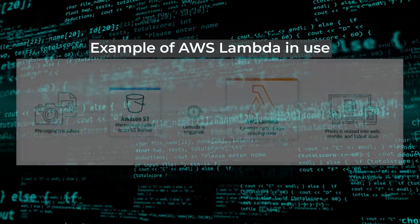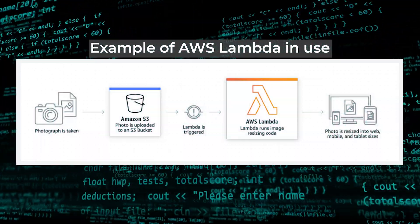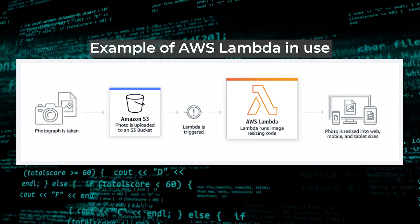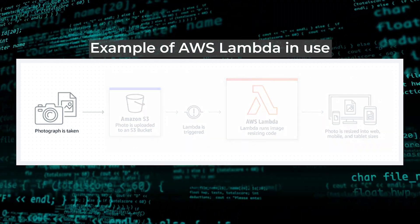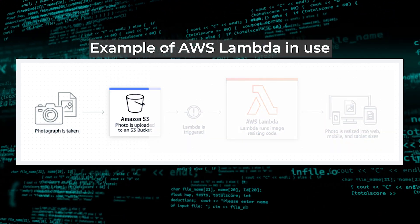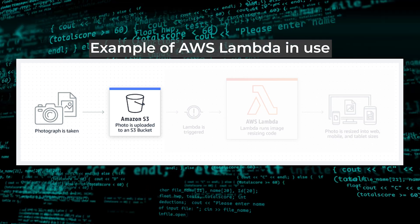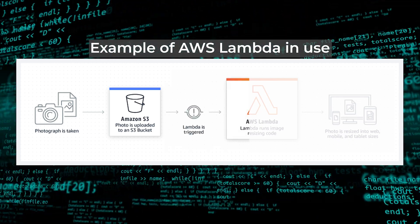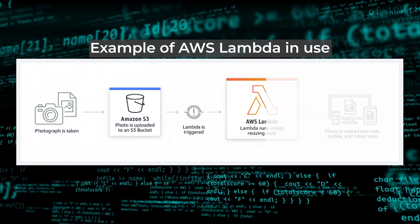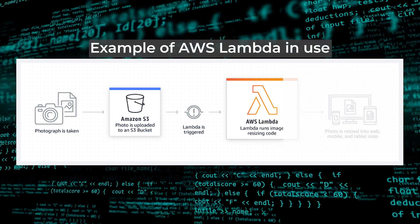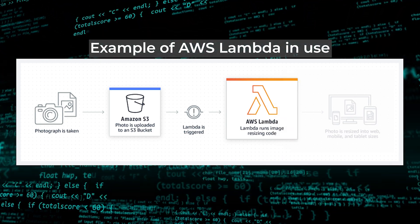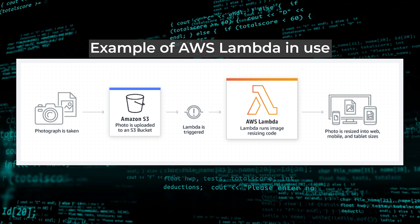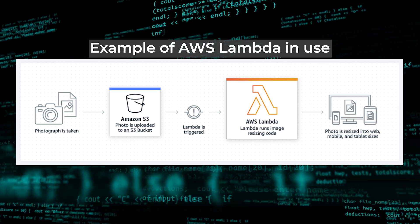A simple example of this can be demonstrated when a user wishes to upload an image to a web platform. The image is uploaded to the Amazon e-commerce site, the Lambda function is triggered, and the resizing code runs using just the necessary resources automatically. The image is resized and configured, ready to be used on different devices.